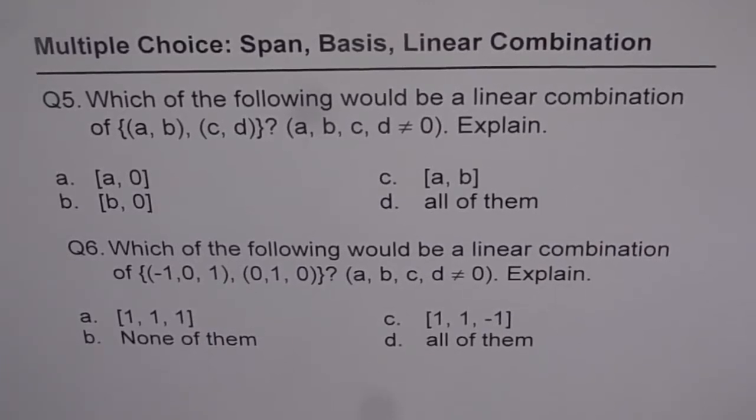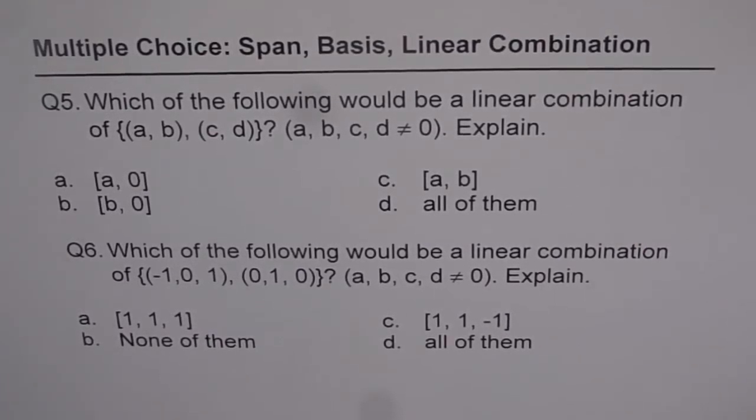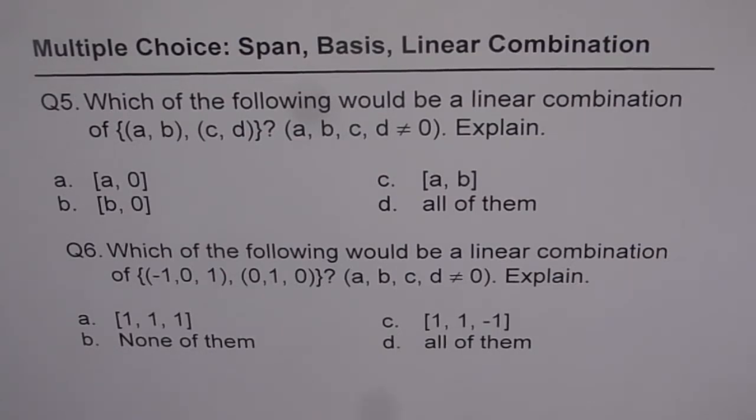So, we have some multiple choice questions regarding span, basis, and linear combination. Question number 5: Which of the following would be a linear combination of AB and CD vectors, where A, B, C, D are non-zero? Explain.